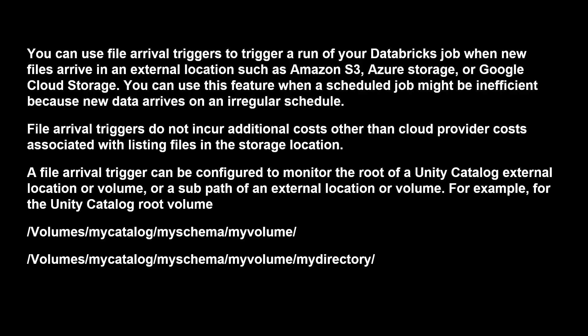File arrival triggers do not incur any additional cost other than the cloud provider cost associated with listing the files in the storage account. The moment a file arrives in a specific location, it lists and detects that a new file has come in. That listing cost — the storage account cost associated with listing the file — is the only cost you will incur. A file arrival trigger can be configured to monitor the root of the Unity Catalog external location or volume, or a sub-path of an external location or volume.